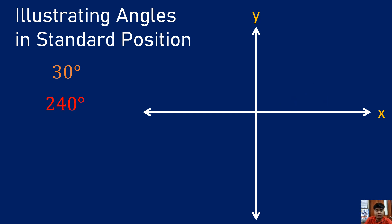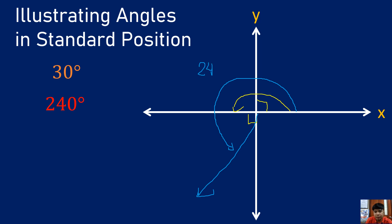What about 240 degrees? That is still a positive angle, so the rotation must be counterclockwise. 90 plus 90 gives us 180 degrees, and 180 plus 90 gives us 270 degrees. Since this is 180 degrees here, we just need to add 60 more degrees to form 240 degrees. The rotation is counterclockwise — I approximate 60 degrees past 180, then create a terminal side. That illustrates 240 degrees in standard position because I started from the positive x-axis.